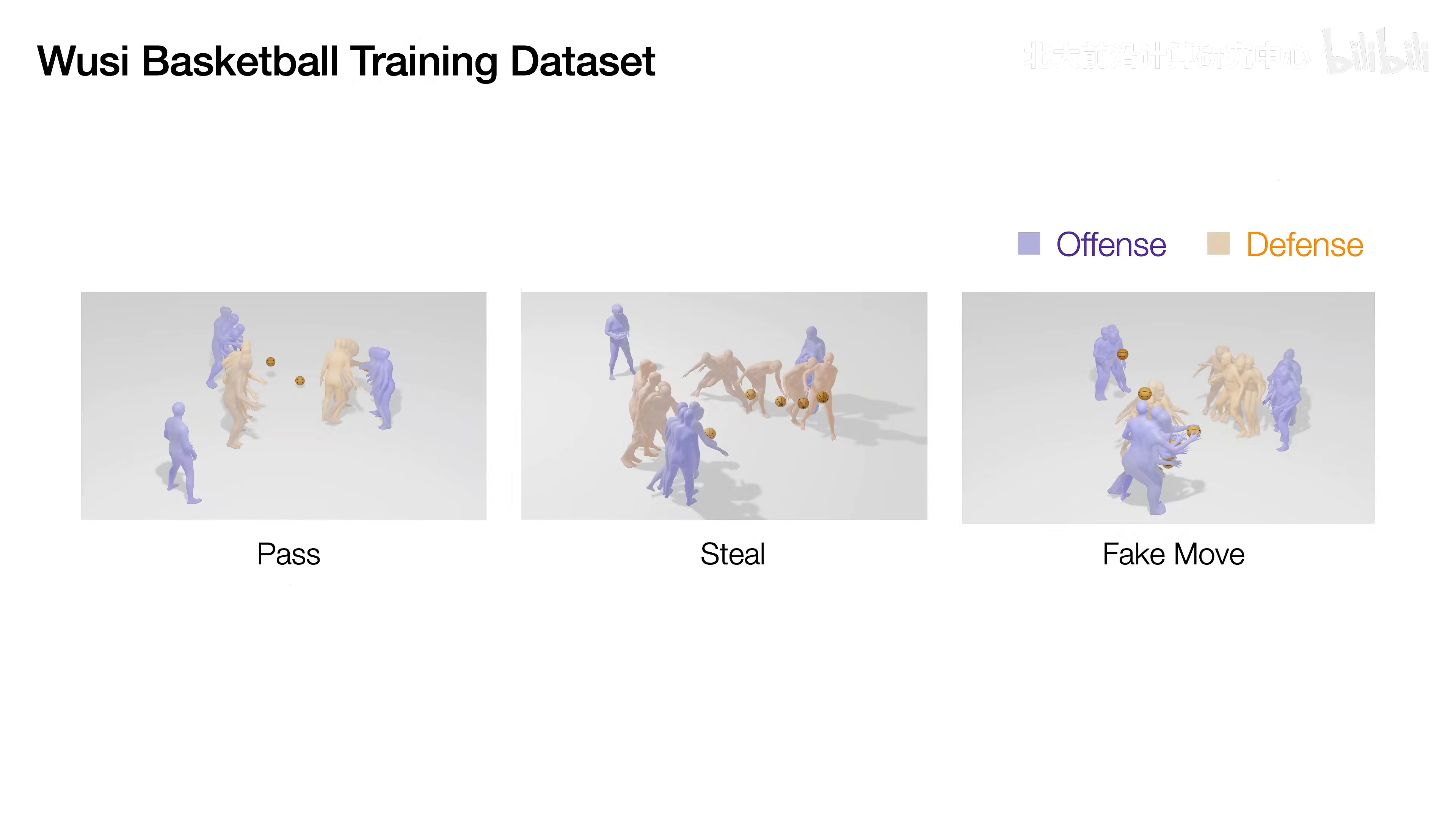To foster research in this field, we introduce the Wusi Basketball Training dataset, featuring professional basketball athletes performing three-on-two drills. The three offensive players pass the ball while they compete against two defensive players who strive for steals and deflections. Our dataset contains intense and strategic multiperson interactions.